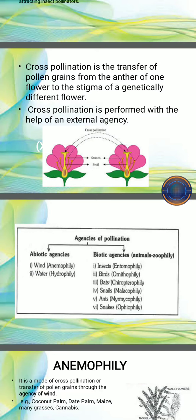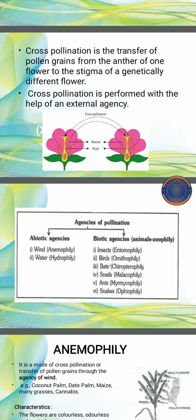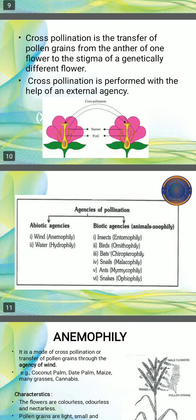Good morning students. Today we will discuss cross-pollination. In the previous lecture we discussed self-pollination. Cross-pollination is the transfer of pollen grains from the anther of one flower to the stigma of a genetically different flower. It is performed with the help of external agencies that can be biotic or abiotic. Abiotic agents are water and wind, and biotic agents are insects, birds, bats, snails, ants, and snakes.